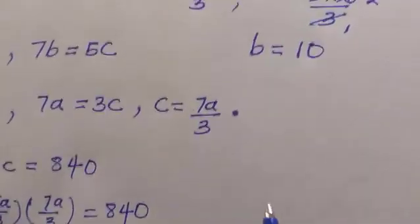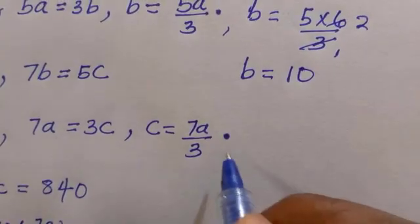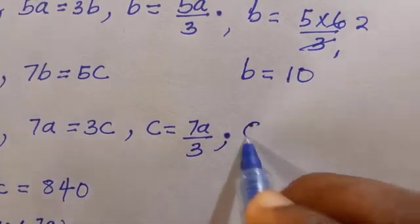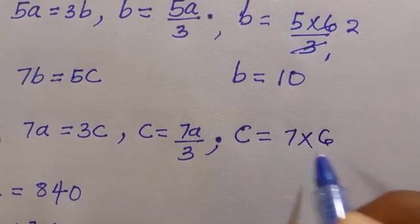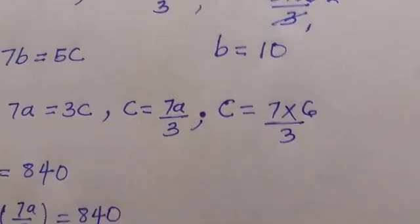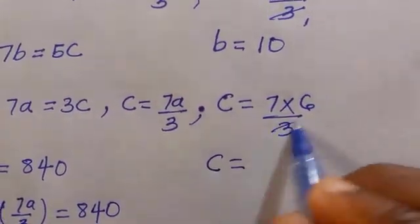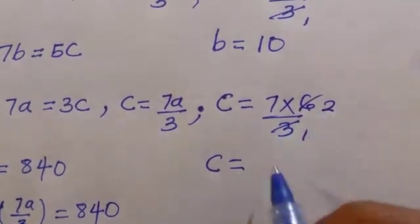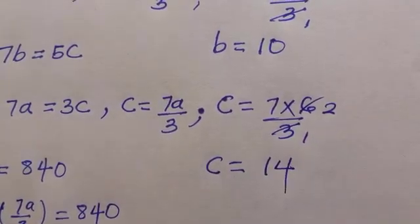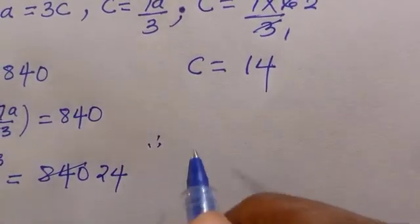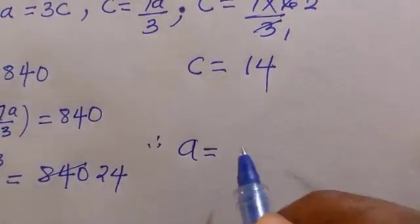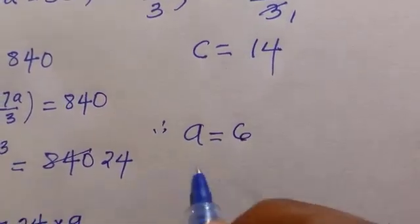To obtain c as well, we substitute the value of a which is 6. C equals 7 multiplied by 6 divided by 3, which simplifies to 7 times 2, that is 14.